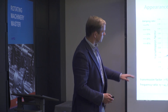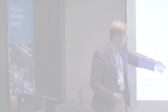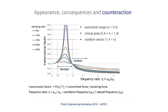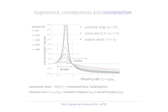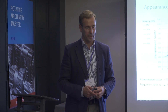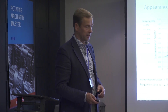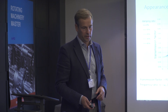The critical area is somewhere before a ratio of 1 up to the square root of 2 — this is the resonance area, and that's where you usually use dampers. That's what we are going to be talking about.